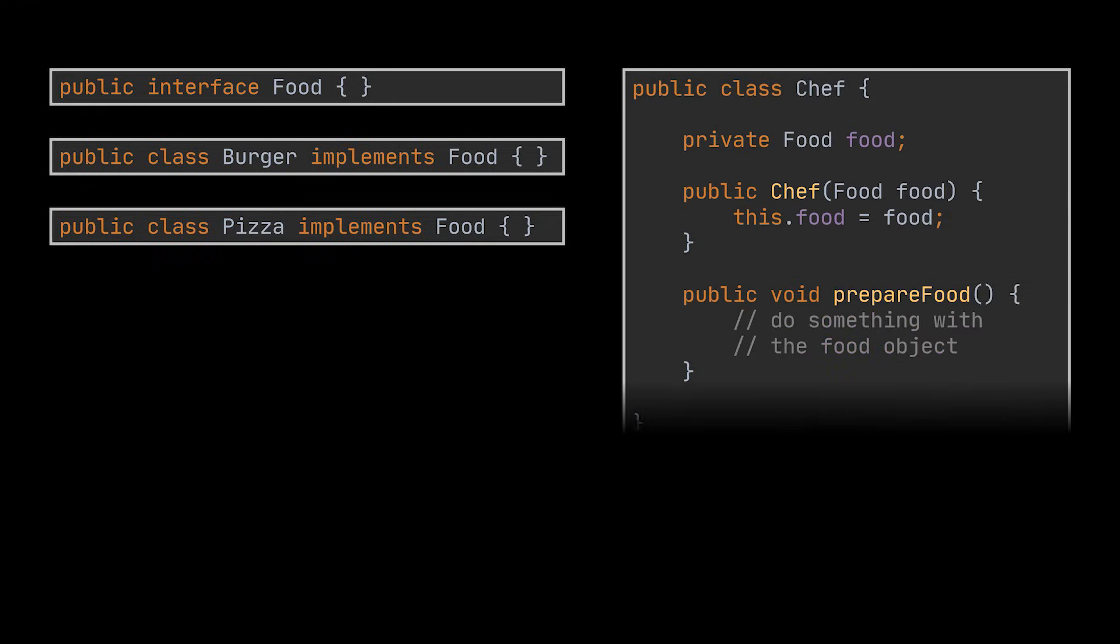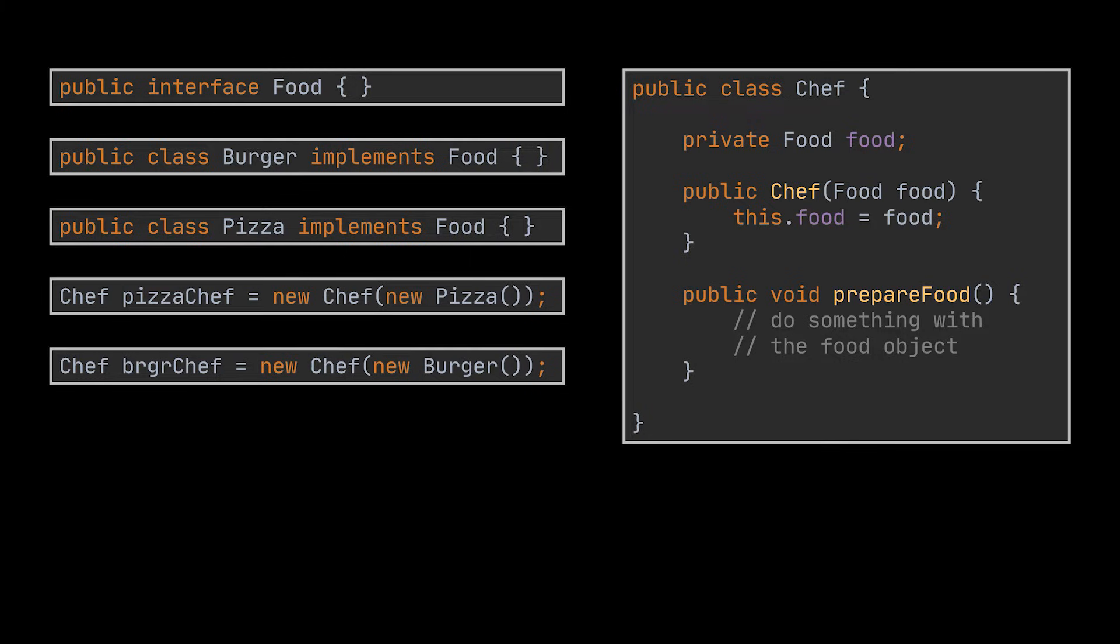The best thing we can do here is pass a food argument to this chef object while it is being instantiated. So if we create a chef object while passing to it a burger object, then we have a chef that specializes in burgers, and so on.